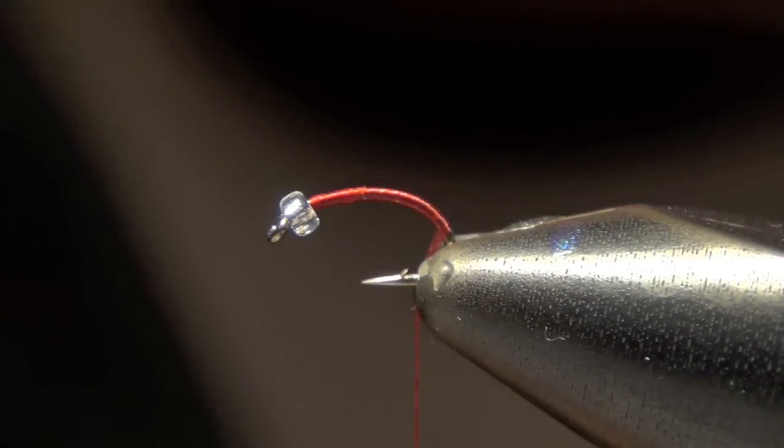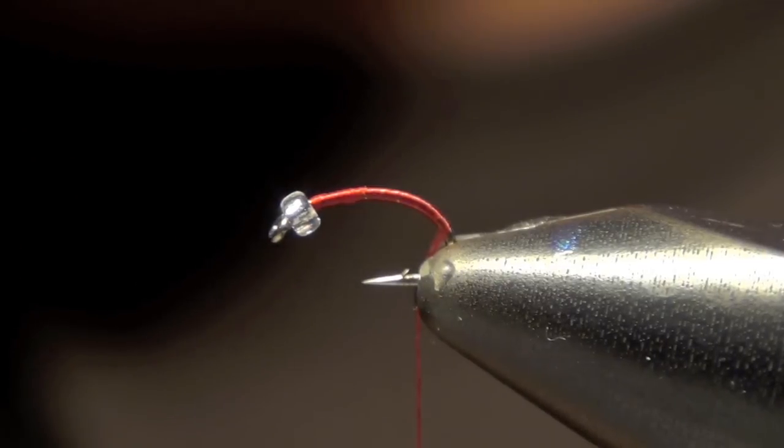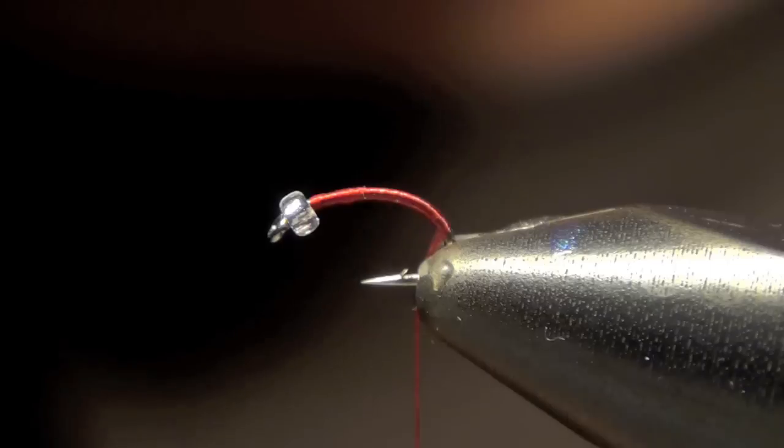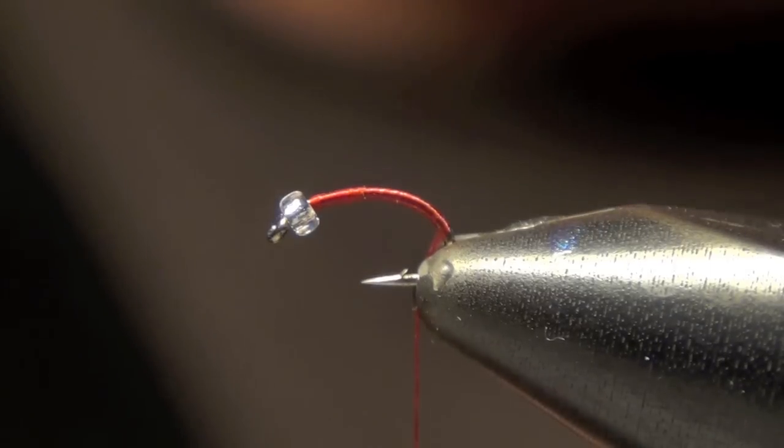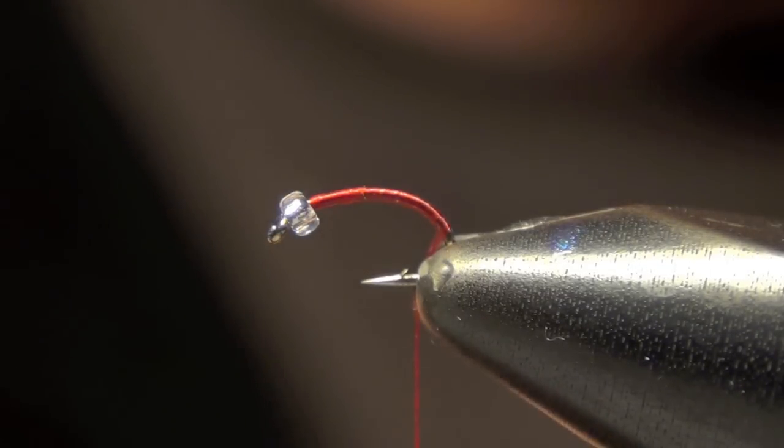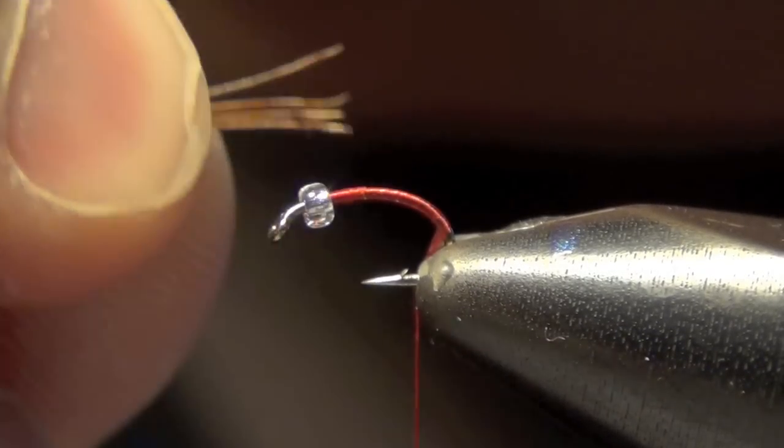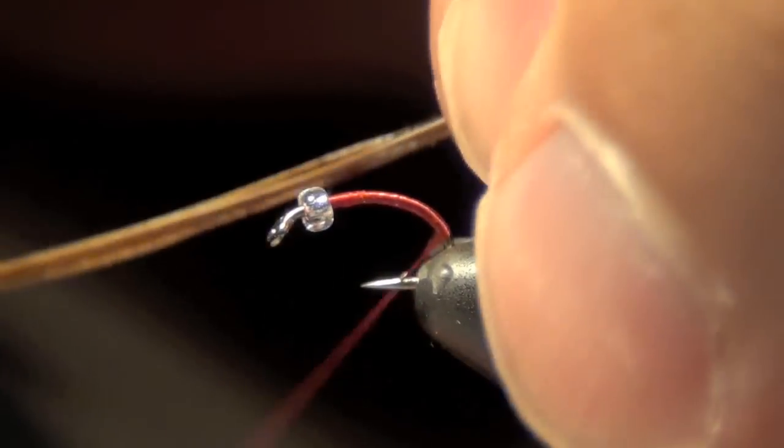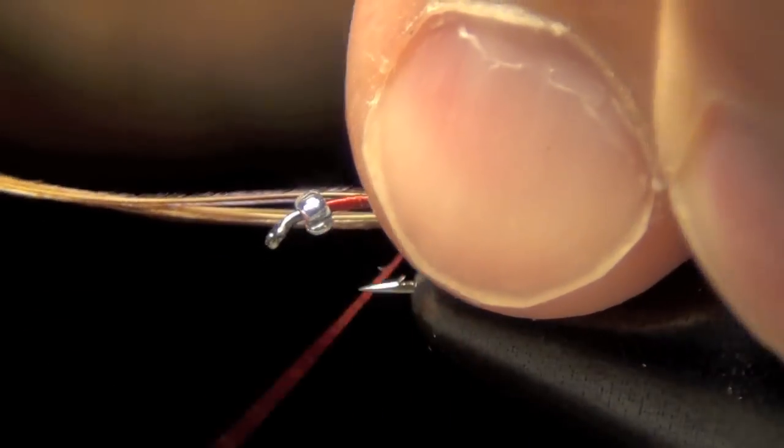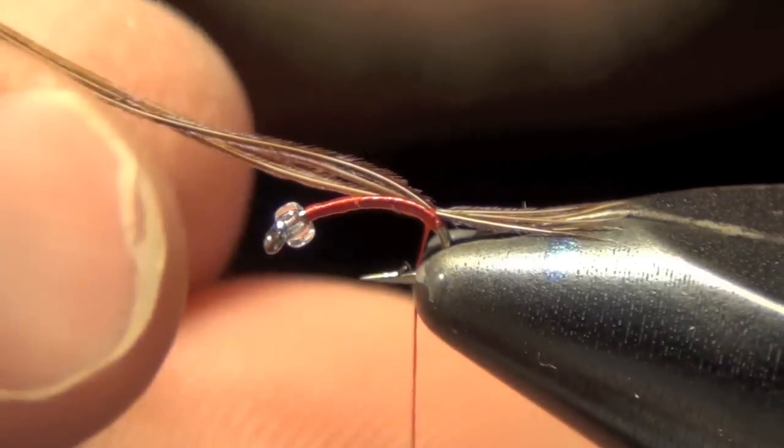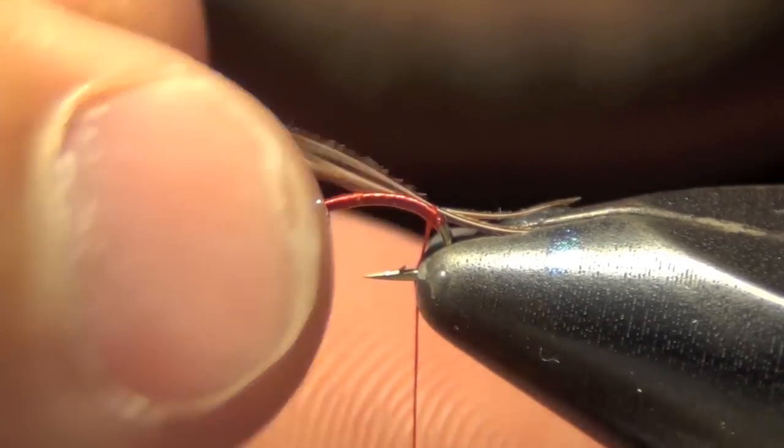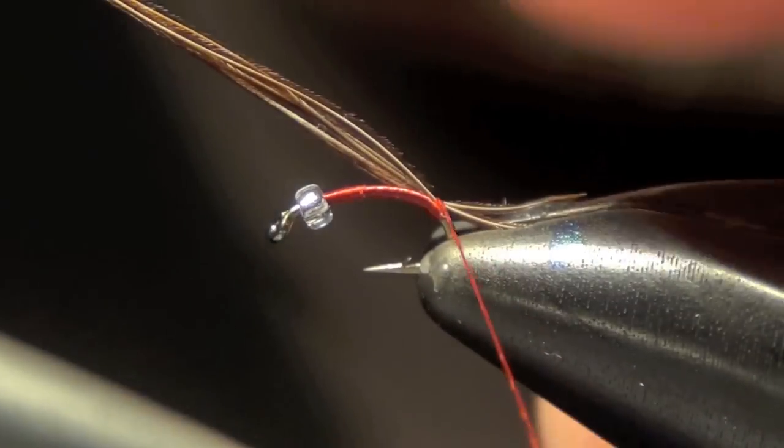Next I'm going to take three to four strands of pheasant tail fibers and I'm going to use these for the tail. I want those to be roughly the length of the shank of the hook, so I'm just going to measure it out there and tie it in. Usually I tie them in just too long, so I just take them and pull them to the length that I like.